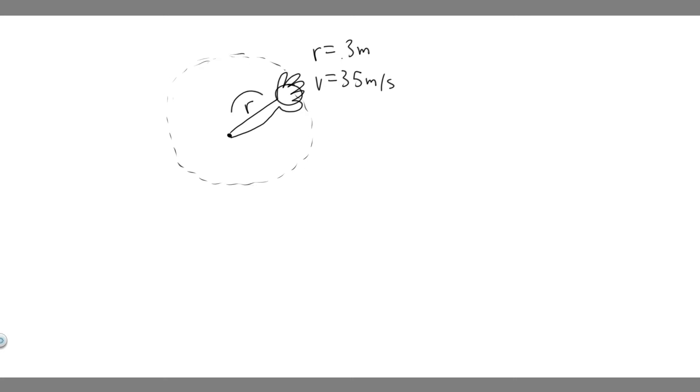What we're given is the radius. When they say the distance from the ball to the center of the joint, they're basically giving us the radius of our circle, which is 0.3 meters. They also give us the linear velocity, which is 35 meters per second. And what we're trying to find is the angular velocity.